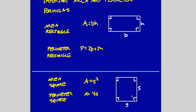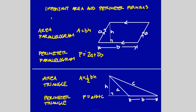For the parallelogram: the area is base times height, where the height is the altitude. The parallelogram has opposite sides that are parallel and also congruent. Make sure to distinguish — the slanted side labeled 'a' in the diagram is not the height. The height is like a piece of rope dropped from the ceiling to the floor, intersecting at a right angle. The area is base times height, just like a rectangle, but the perimeter is 2a plus 2b.